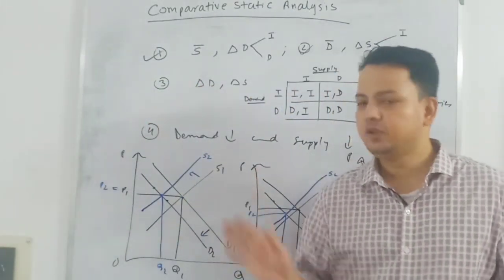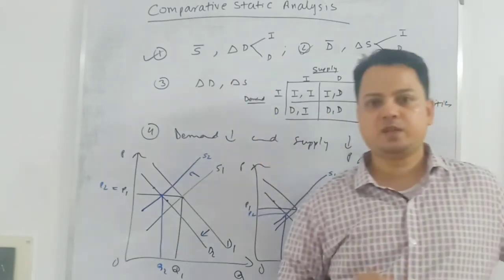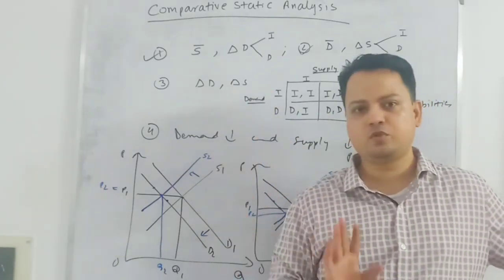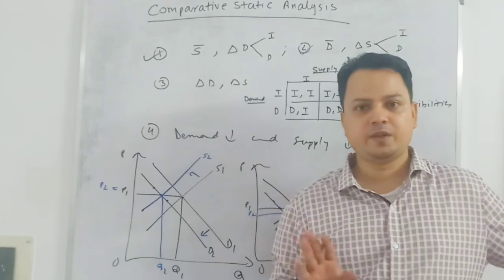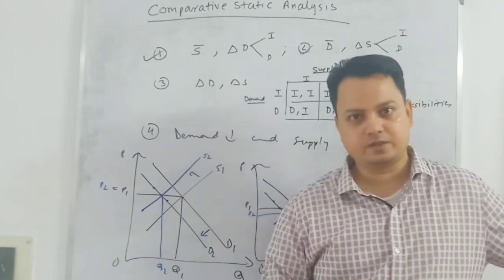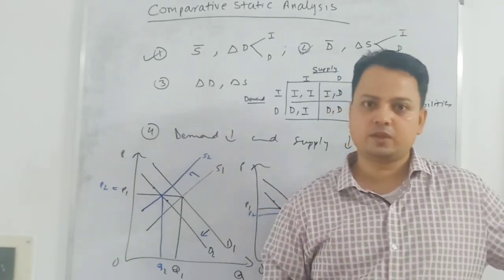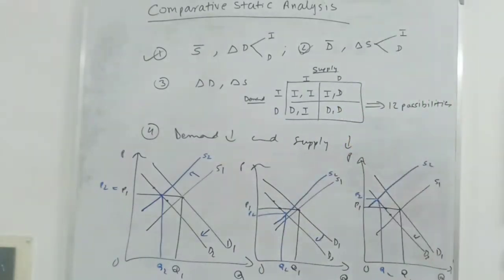I hope this video is clear. In this way we do comparative static analysis. These are the 16 possibilities that you will be facing when you are doing comparative static analysis. I hope this video will be helpful. Thank you for watching.